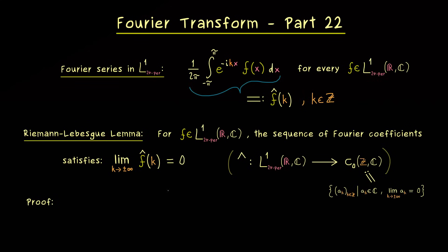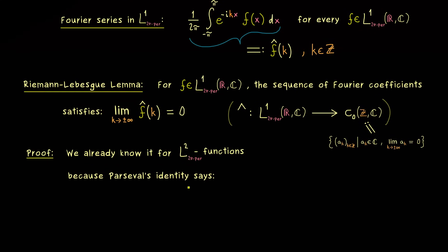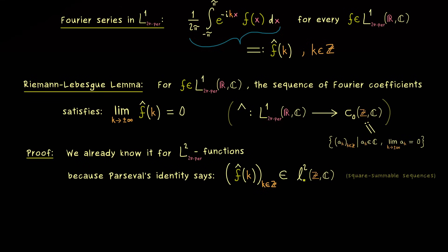Today we will just prove that the hat map maps into this sequence space. For the proof, note that we already know it for L2 functions, because for square integrable functions we have Parseval's identity. This tells us that the corresponding sequence of Fourier coefficients is square summable — it's an element of small l2. And obviously tending to zero at infinity is necessary for a sequence to be square summable, so l2 is a proper subset of C0.